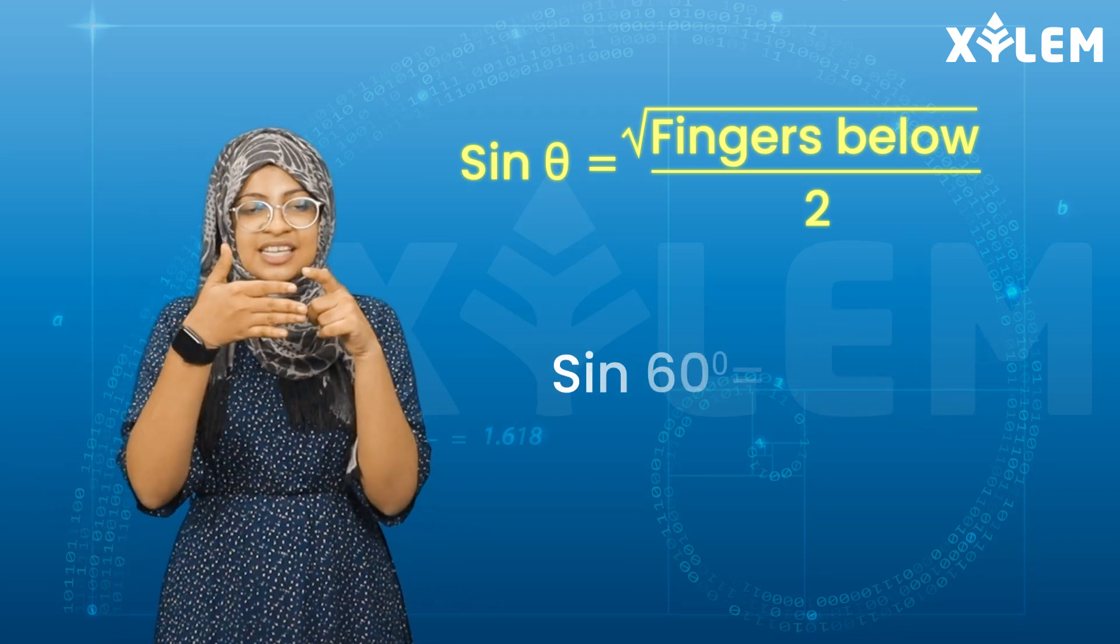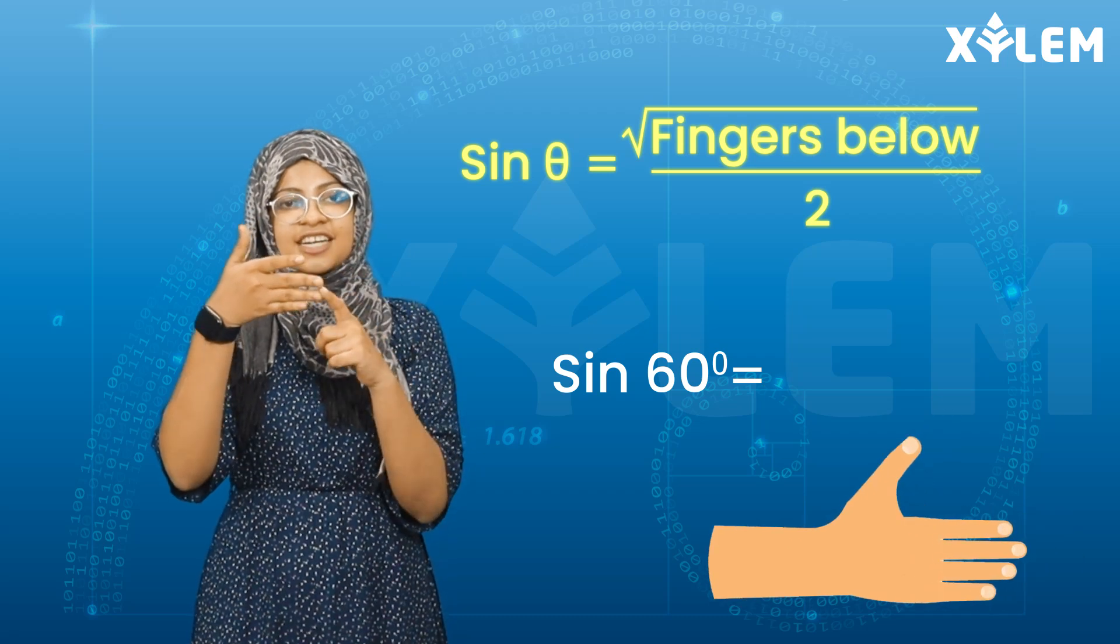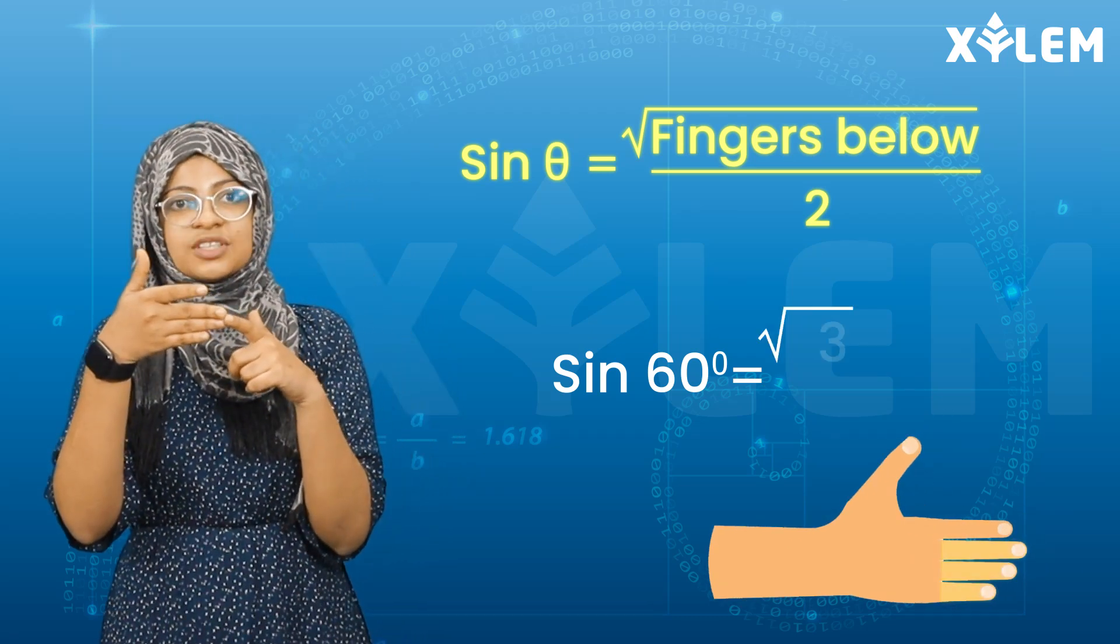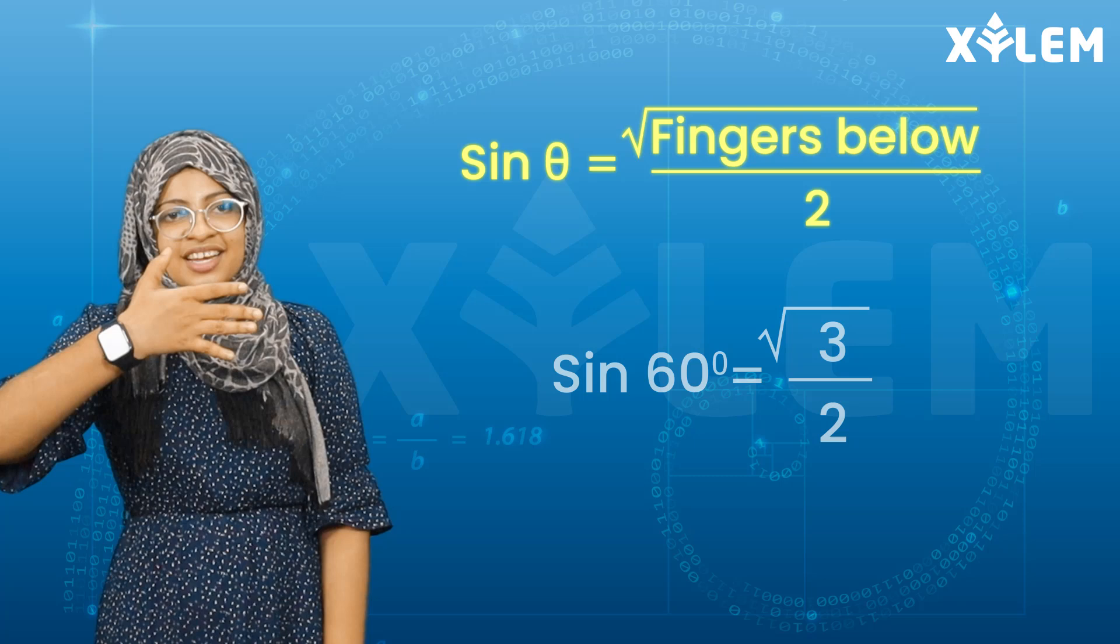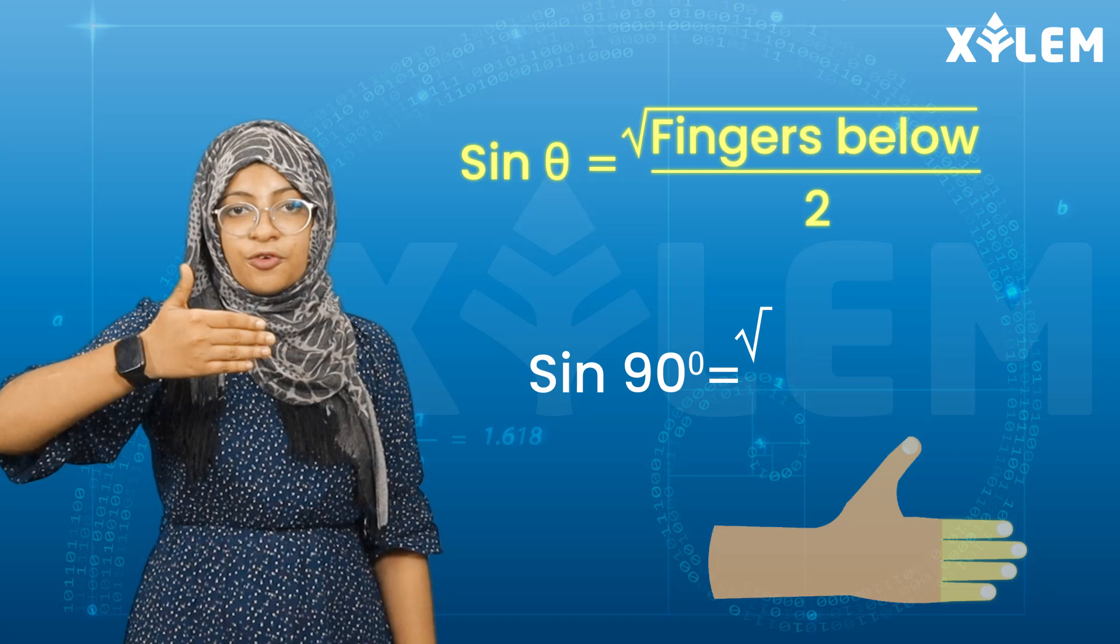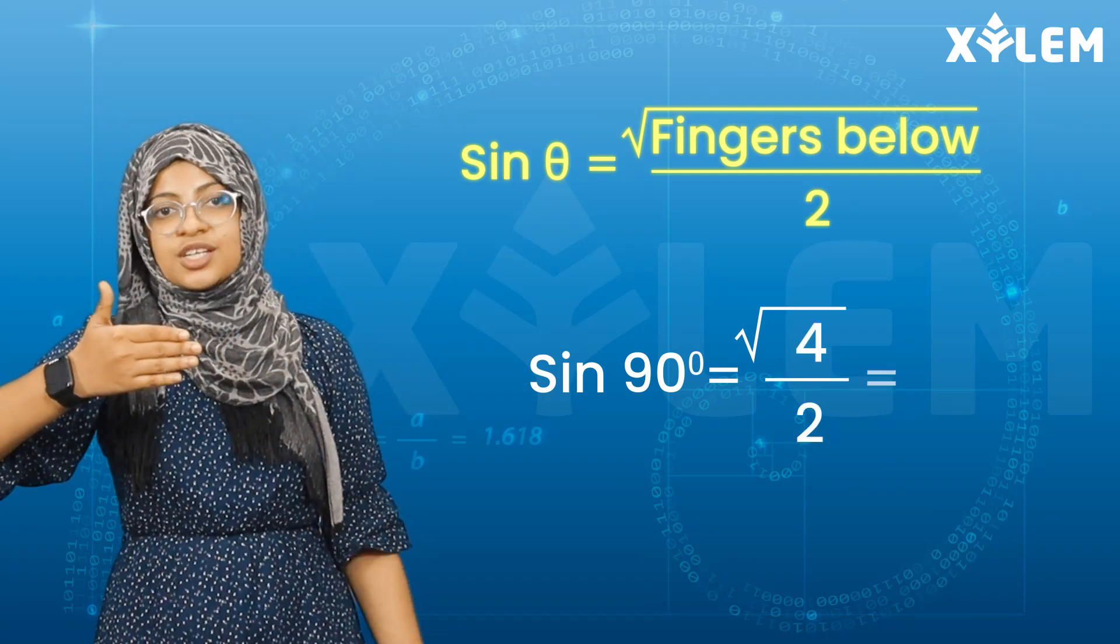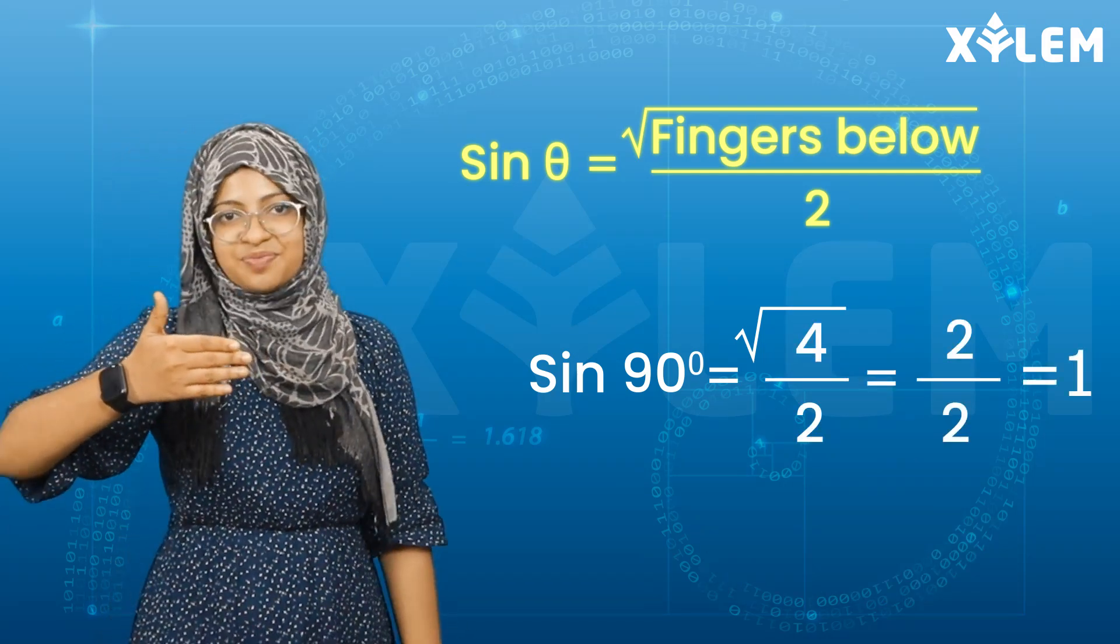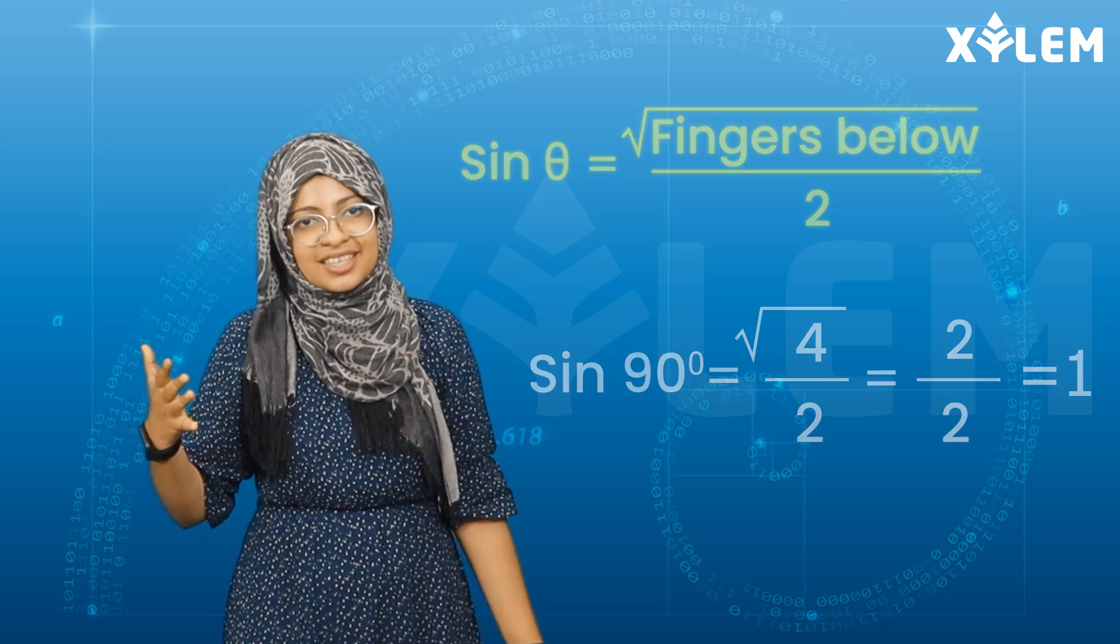Sin 60°. How many fingers are below? Three fingers. So root of 3 by 2. For 90°, the last one, sin 90°. How many fingers? Four fingers. So root of 4 by 2. Root of 4 is 2, so 2 by 2 is 1. We can get all the values of sine.